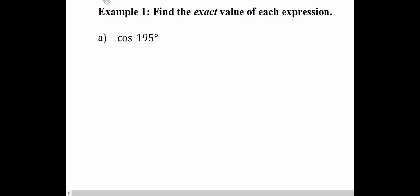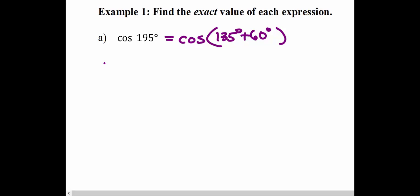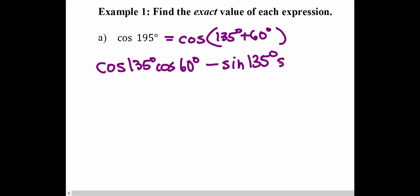We want to find the exact value of cosine of 195 degrees without using a calculator. We're not familiar with 195 degrees, but we are familiar with angles that might add or subtract to give 195 degrees. So let's break this up: instead of writing it as 195 degrees, let's think about it as 135 degrees plus 60 degrees — two familiar angles. Using our cosine identity for a sum: cosine of 135 times cosine of 60, then opposite sign, so minus sine of 135 times sine of 60.